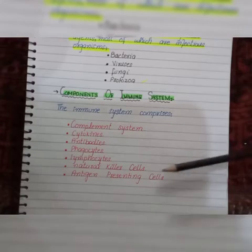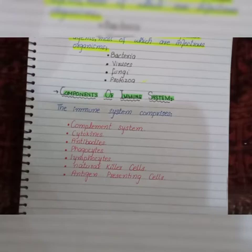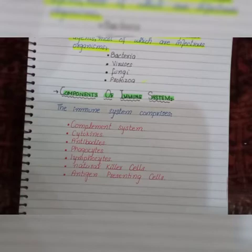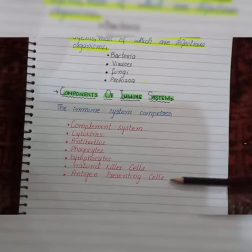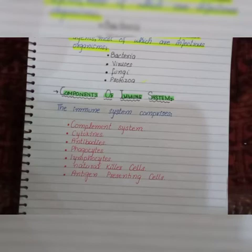Next we have natural killer cells, which are also lymphocytes and help in killing virus-infected cells or tumor cells. They destroy cells by secreting cytokines. An important point: all cell lymphocytes — B lymphocytes and T lymphocytes — have immunological memory, but natural killer cells have no immunological memory.